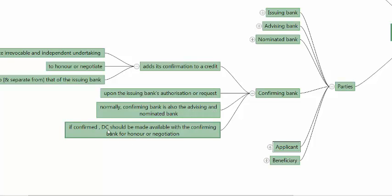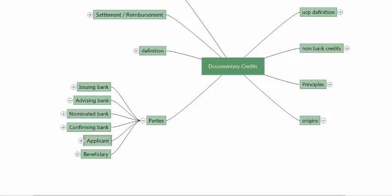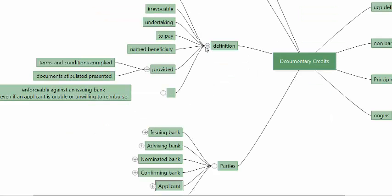If confirmed, the DC should be made available with the confirming bank for honor or negotiation. In case the DC is available with any bank, once a confirmation is added by the confirming bank, the DC should say 'available only with the confirming bank.' These are the various participatory roles in documentary credits, and we have seen the definitions of the terms associated with the credit.